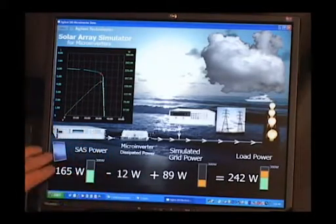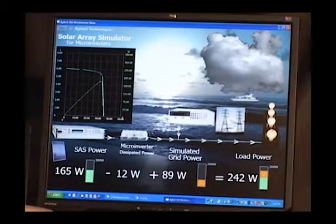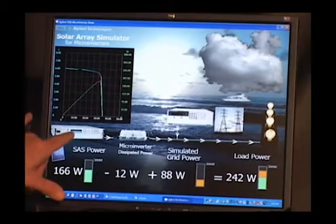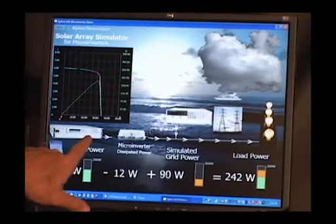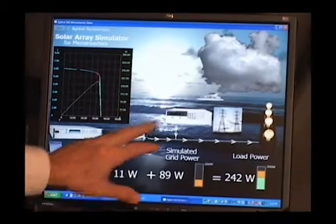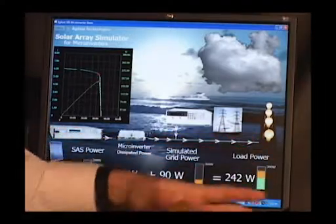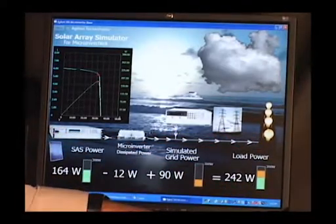In this case instead of the solar panel we're providing power to the microinverter with my solar array simulator. So I've got the SAS, the solar array simulator connected to the microinverter connected to my simulated grid and then finally onto some light bulbs I have as my real load.